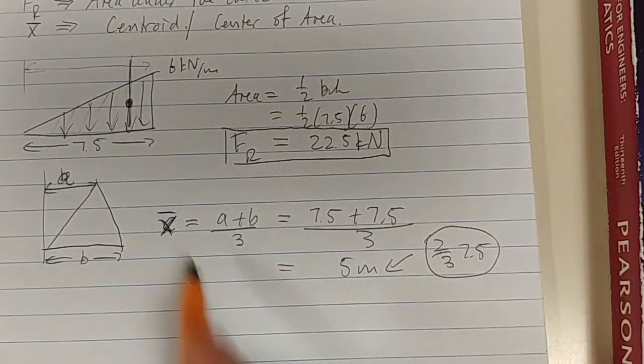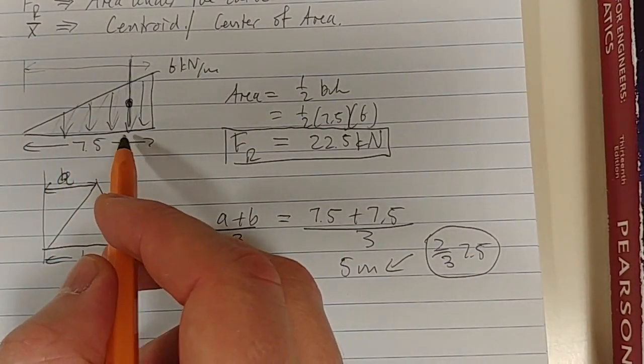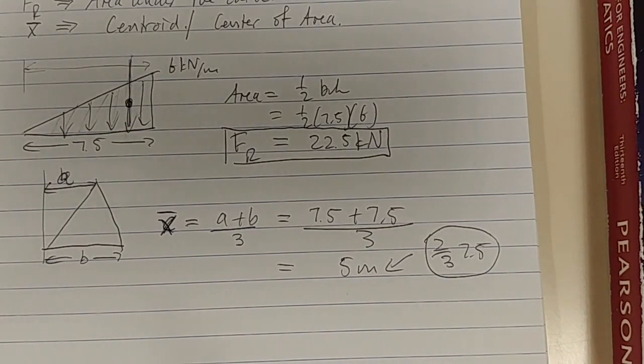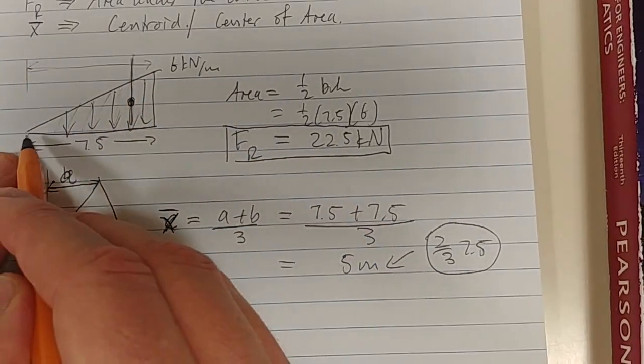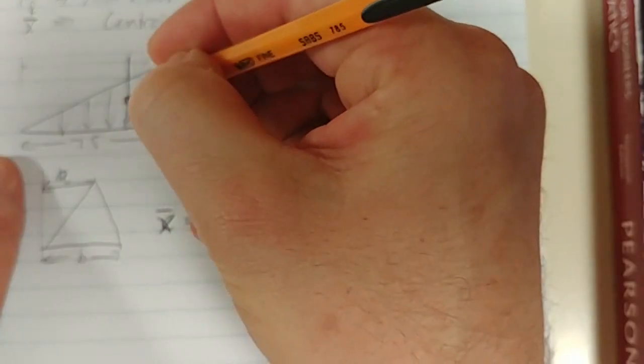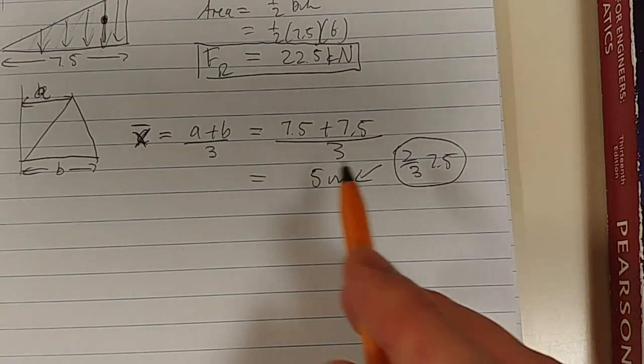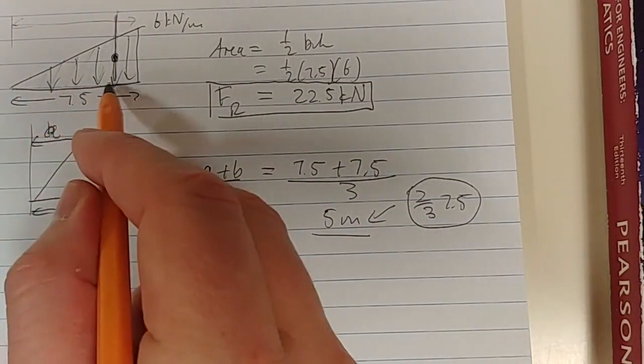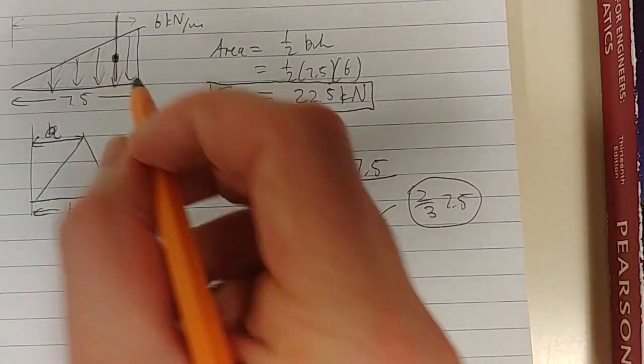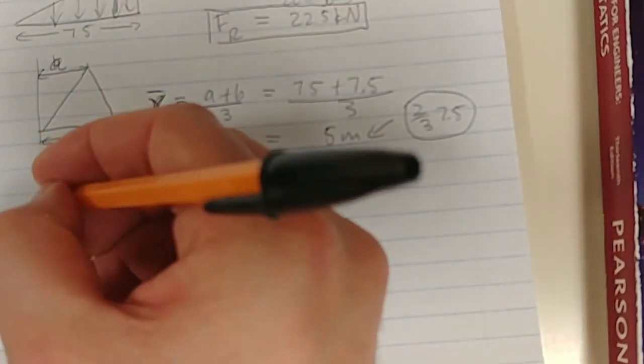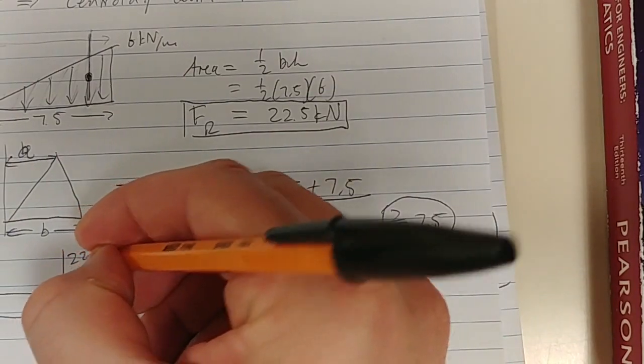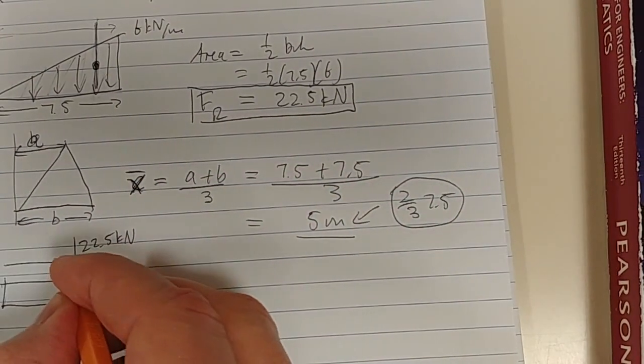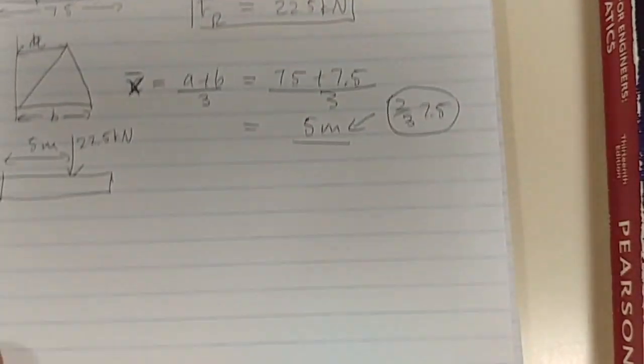Whenever we have a triangle like this, you can see 2/3 of 7.5: 2 divided by 3 times 7.5 equals 5. It's always going to be towards this heavier side, right? Your centroid should have the same amount of area on both sides of this line. So the answer here is 5 meters. It's 2/3 from that side, 1/3 from that side. This first one: our force equals 22.5 kilonewton, and this length acting through the centroid is 5 meters.